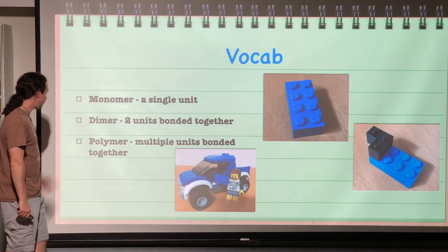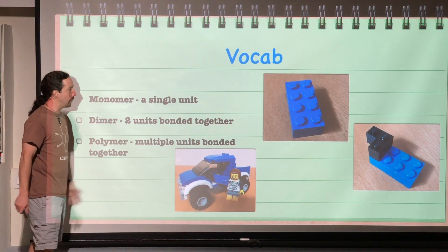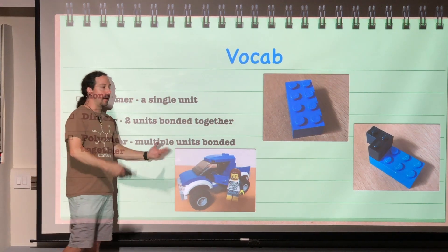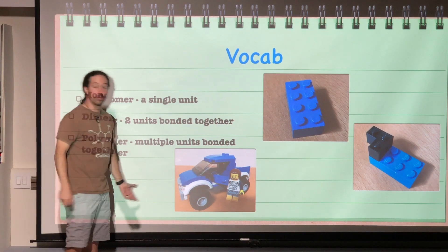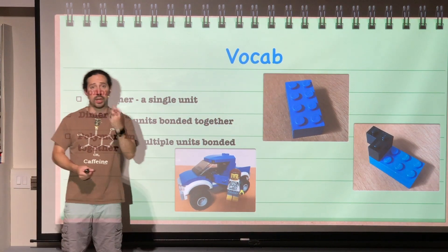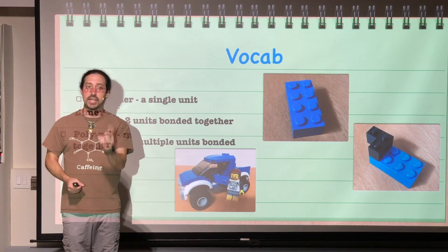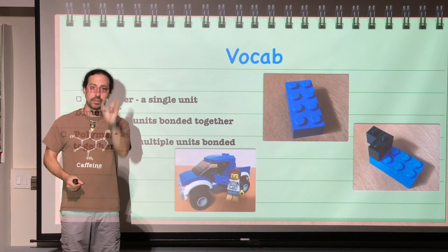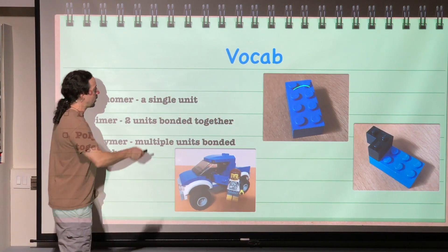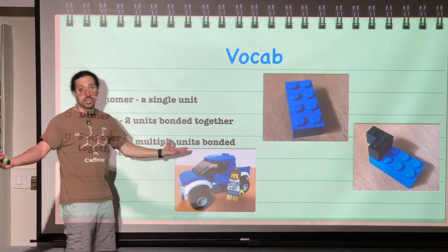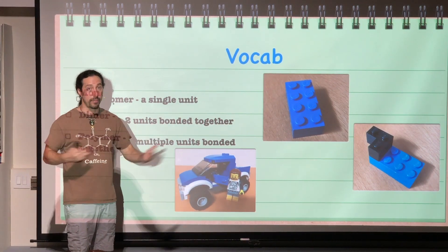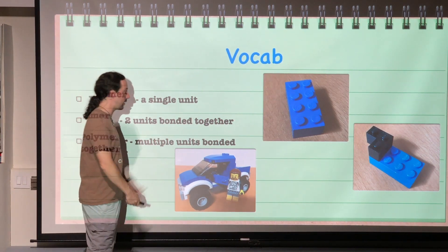First off, we've got some vocab. A monomer is a single unit. So when I think of a monomer, I think of like a single Lego. It's a single unit of a much larger thing, but it can sit by itself and just be that single unit. So a Lego brick, it still functions as a Lego brick. It is a Lego brick.